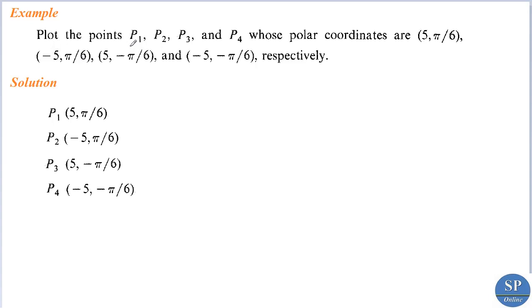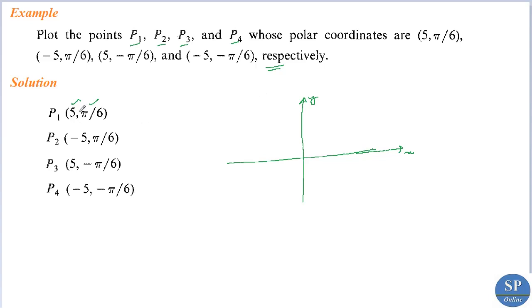The first example: plot the points P1, P2, P3, and P4 whose polar coordinates are (5, 5π/6), (−5, 5π/6), (5, −5π/6), and (−5, −5π/6) respectively. Suppose this is the x-axis and this is the y-axis. To plot P1, we have r equal to 5 and θ equal to 5π/6, which is actually 30 degrees. This point P1 will be obtained by rotating an angle θ equal to 30 degrees at a distance r equal to 5 units from the origin.